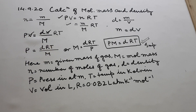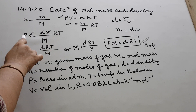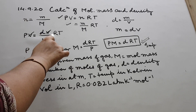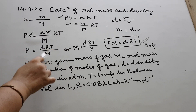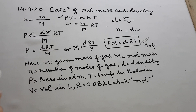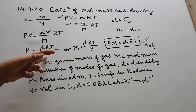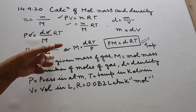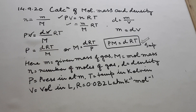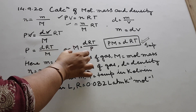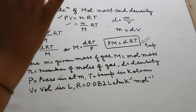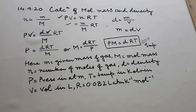V and V cancel out, so P = (d/M) × RT. Or I can say M = dRT/P. The best and easiest form to learn is PM = dRT.